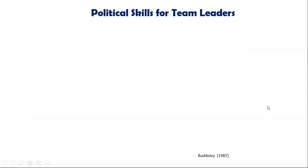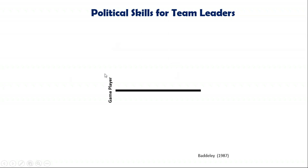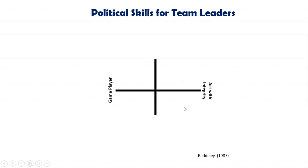Let's build up this political awareness chart. The first thing is a horizontal axis. On the left-hand side, we have people in organisations who are what we would refer to as game players — always scheming, always looking to play the political game. On the right-hand side are people who pride themselves on acting with integrity. So you might like to think: are you more a game player or a person who likes to act with integrity?